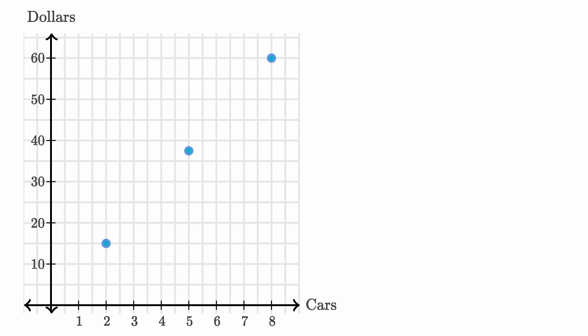So one way to think about it is the ratio between the number of cars he's washing and the dollars stays at 2 to 15. Notice, 2 cars for every $15, or $15 for every 2 cars. And so when you go to 8 cars, you're multiplying by 4 the number of cars and also multiplying by 4 the number of dollars. And so once again, since we have a fixed ratio here, all three of these points sit on the same line.